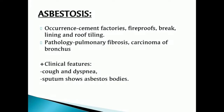Asbestosis is a chronic inflammatory medical condition affecting the parenchymal tissue of the lung. Occurrence: cement factories, fireproofing, brake linings, and roof tiling. Pathology is pulmonary fibrosis and carcinoma of the bronchus. Clinical features are cough, dyspnea, and sputum showing asbestos bodies.